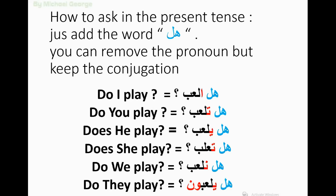Now we are going to learn how to ask in the present tense. Just add the word هل. You can remove the pronoun, but keep the conjugation. Do I play: هل ألعب. Do you play: هل تلعب. Does he play: هل يلعب. Does she play: هل تلعب. Do we play: هل نلعب. Do they play: هل يلعبون.